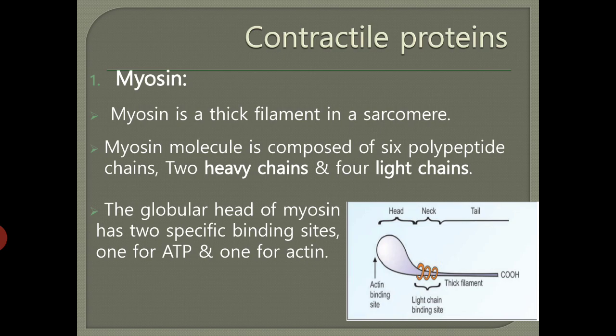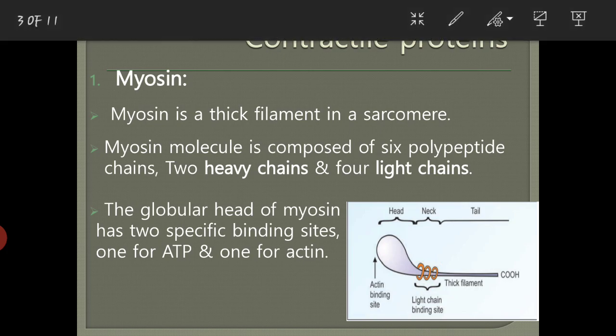Myosin is the thick filament in the sarcomere — the sarcomere is the functional unit of your muscle fiber. The thick filaments are called myosin, which is a contractile protein. This myosin molecule is composed of six polypeptide chains: two heavy chains and four light chains.